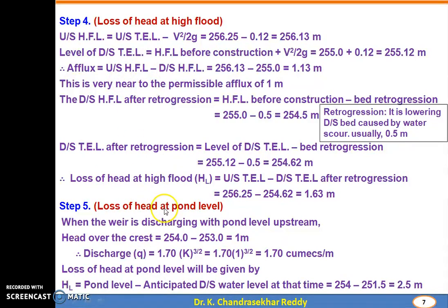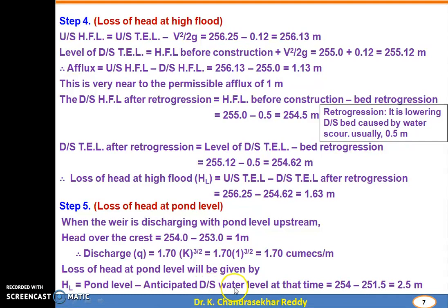Step 5: Loss of head at pond level condition. When the weir is discharging at pond level, head over the crest = 254 - 253 = 1 m. Discharge Q = 1.7 × 1^(3/2) = 1.7 cumecs per meter. Loss of head at pond level = pond level minus anticipated downstream water level = 254 - 251.5 = 2.5 m.